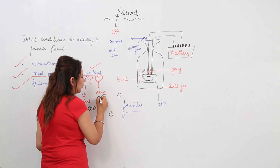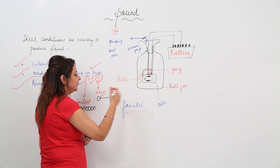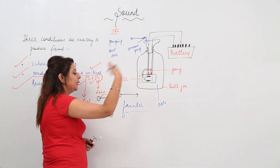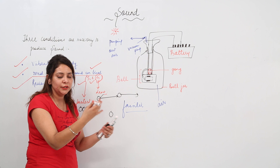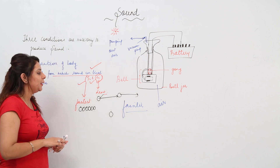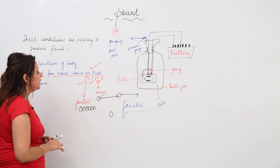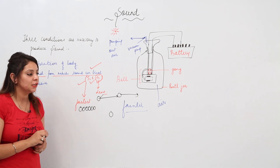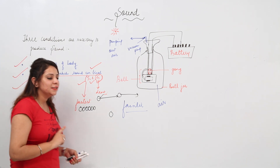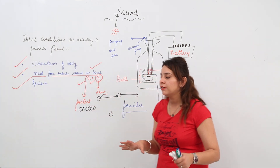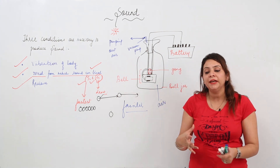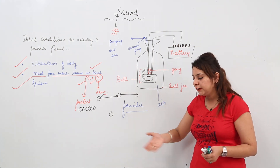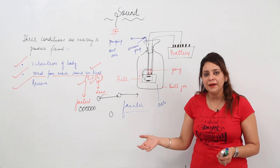When there is a vibration in one particle, it hits the next particle and takes a certain time to transfer energy, and likewise takes more time to transfer energy to the next particle. So the speed of sound is fastest in solids and least in gases.